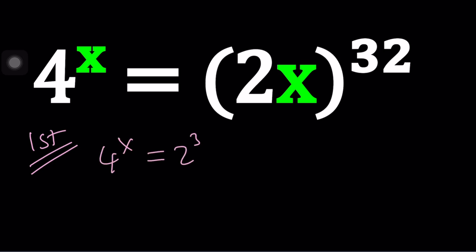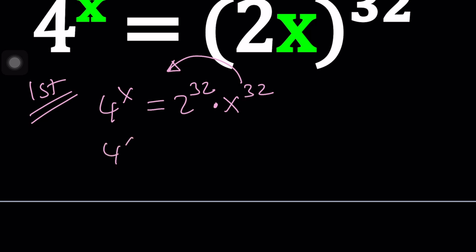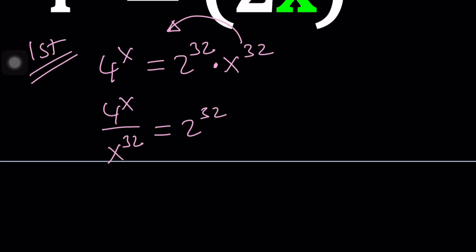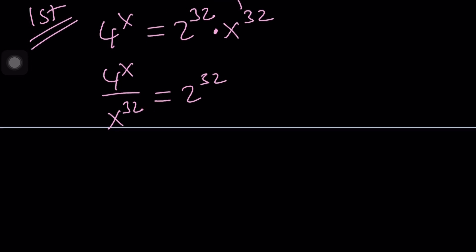Let's go ahead and expand this. We can write it as 2 to the power 32 times x to the power 32, and I want to bring the x over here so that all the x's are on one side. We have this quotient but we can't simplify it because the top is an exponential function and the bottom is a polynomial.